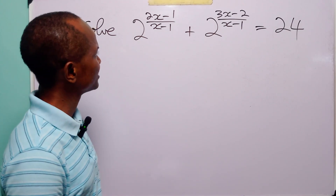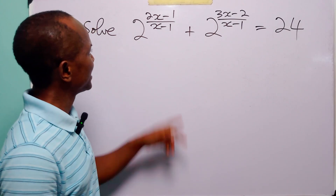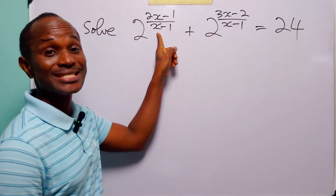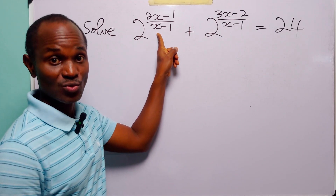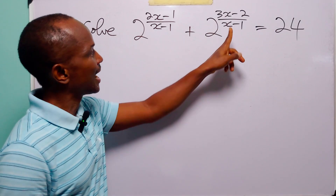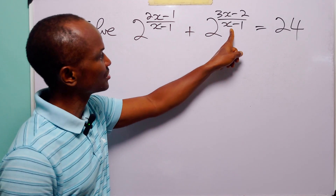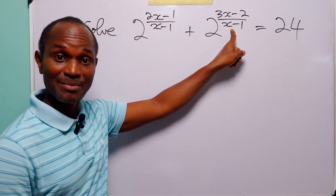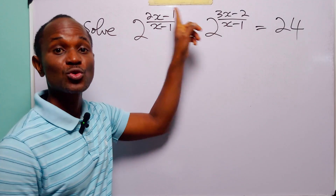Now let us look at this equation. Here you can see that the denominator is x minus 1, and here you can also see that the denominator is x minus 1.